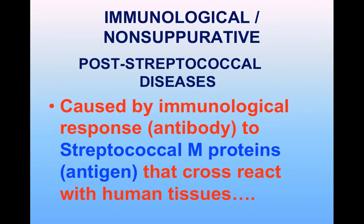Post-streptococcal diseases, also known as immunological or non-suppurative diseases, are disorders where local Group A streptococcal infection is followed by inflammation in an organ not directly infected. This inflammation is caused by immunological response to streptococcal M proteins reacting with human tissue. Nephritogenic M protein strains cause acute glomerulonephritis, while rheumatogenic M protein strains cause acute rheumatic fever.